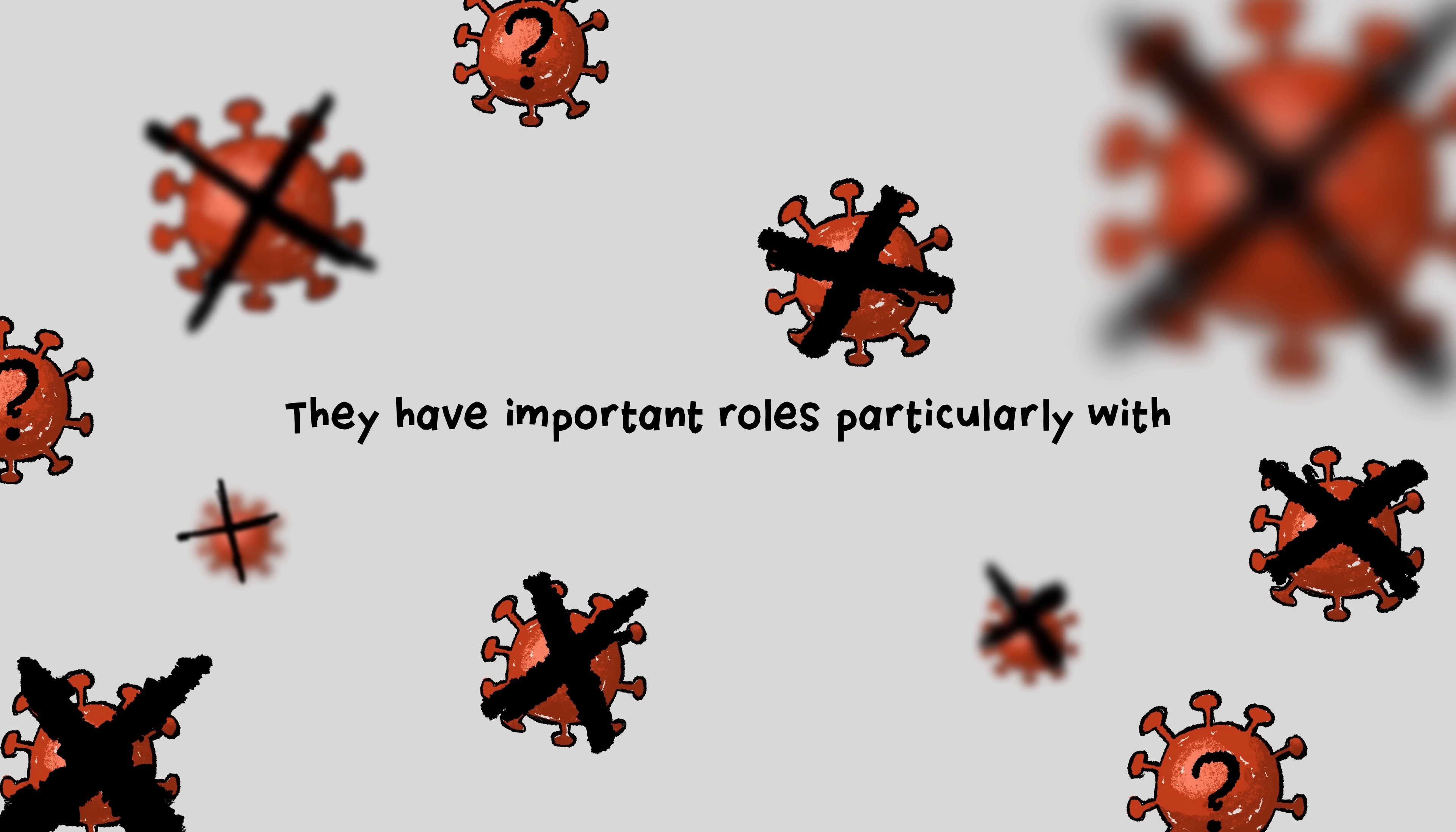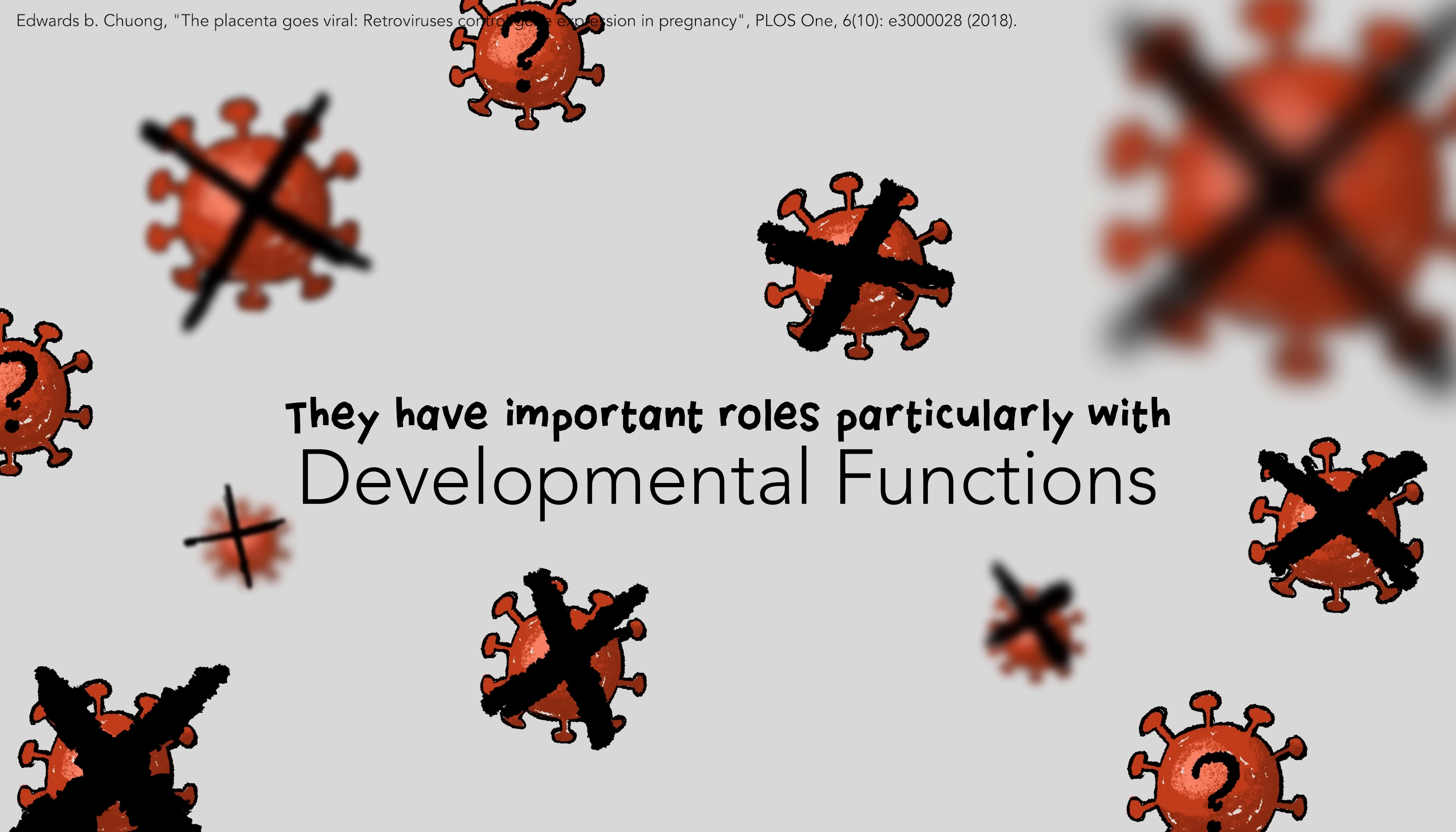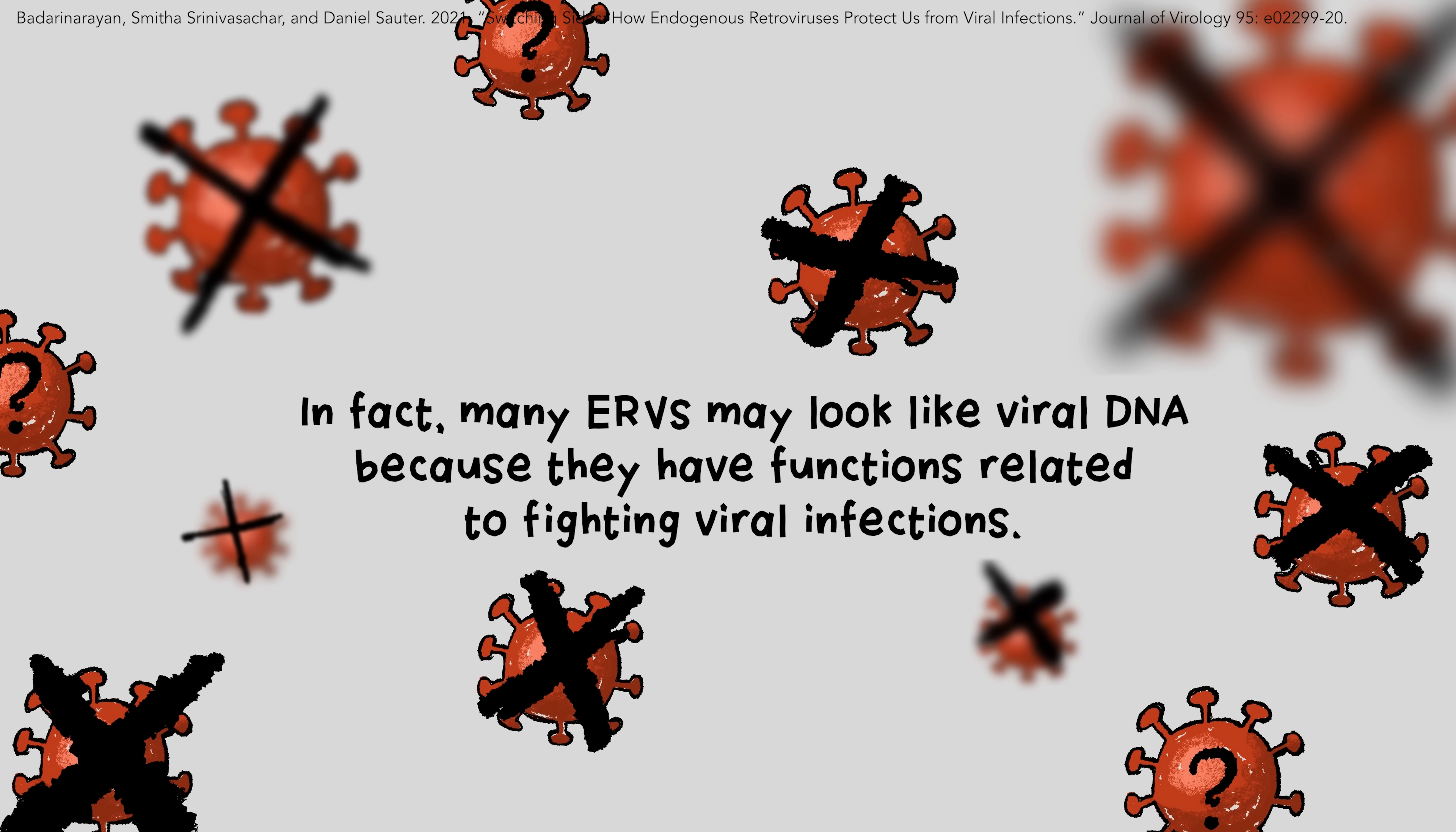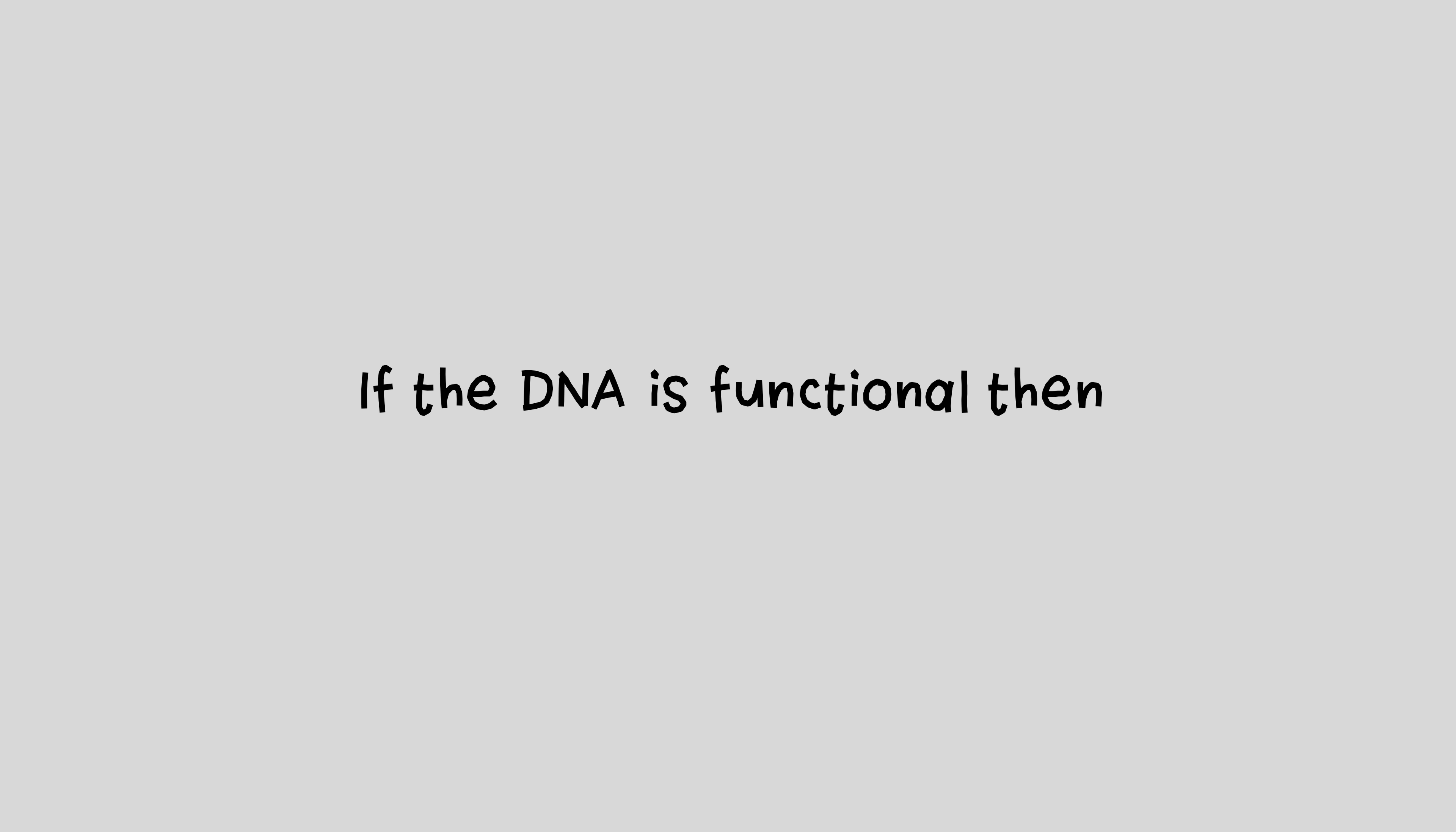They have important roles, particularly with gene regulation, developmental functions, and they're even involved in immune-related functions to repel viral infections. In fact, many ERVs may look like viral DNA because they have functions related to fighting viral infections. This is important. If the DNA is functional, then it provides no special evidence for common ancestry.